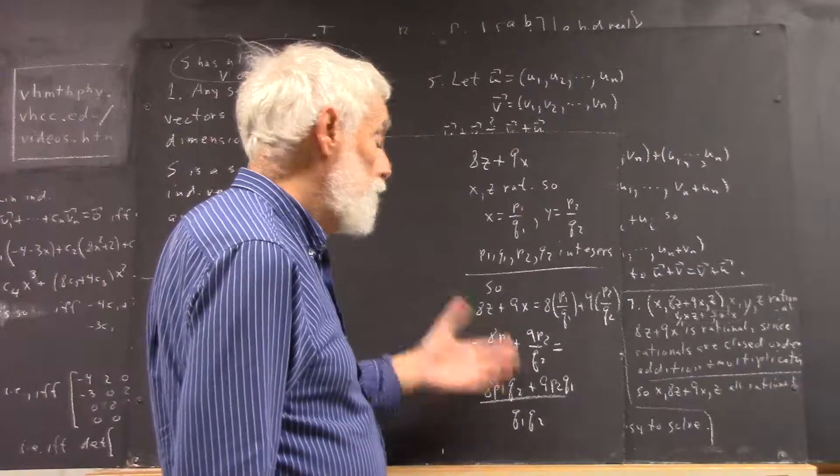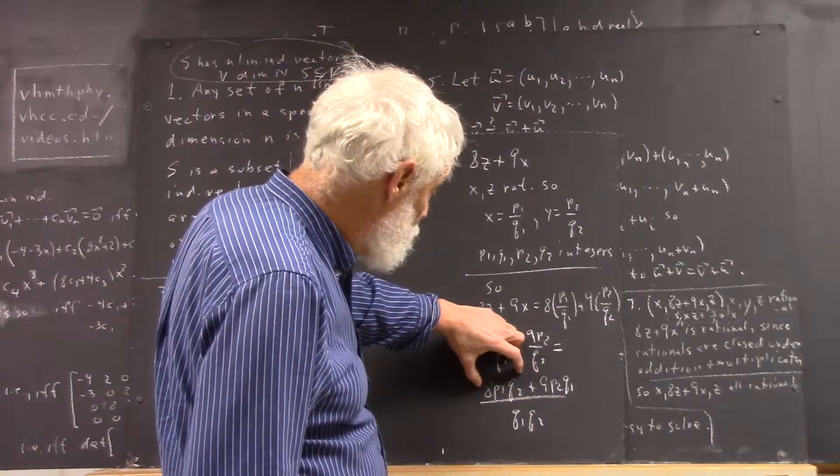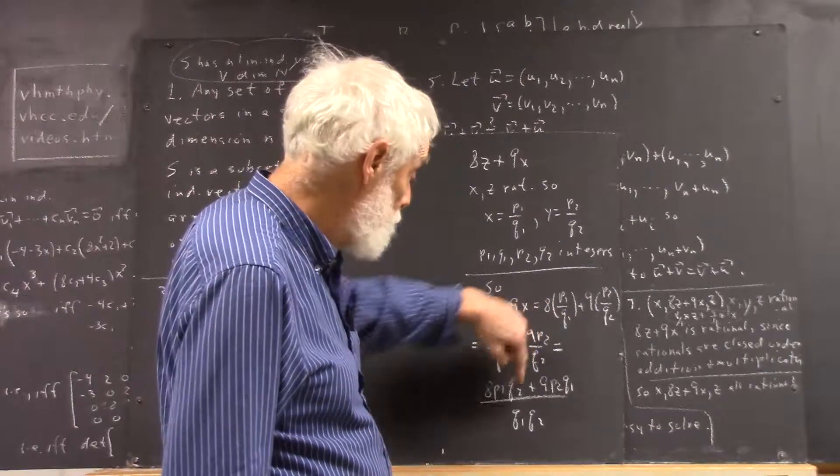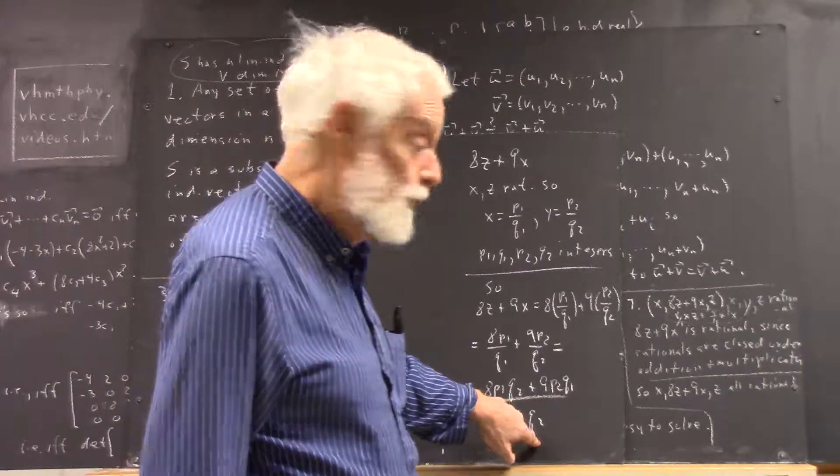Now, p1, q1, p2, q2 are integers. So, this is an integer. This product is an integer. This product is an integer. When we add them, it's an integer. This is a product of two integers. It's an integer.